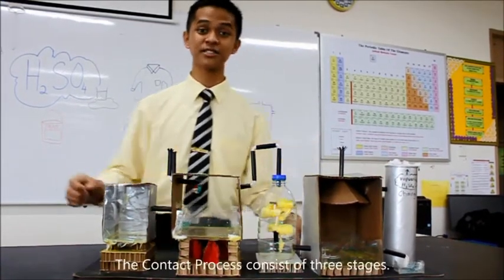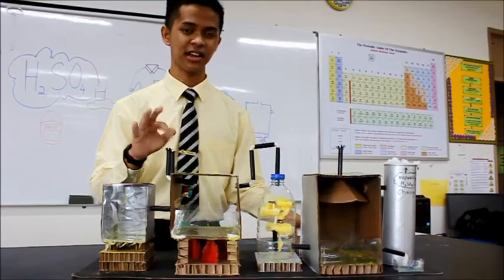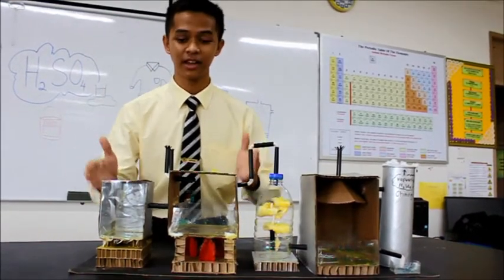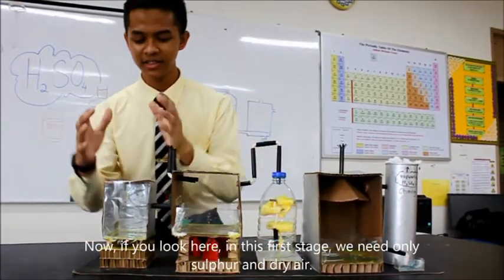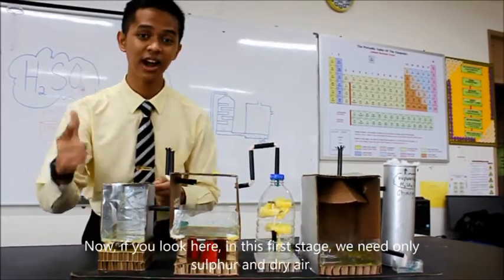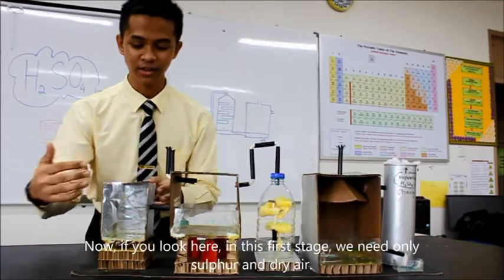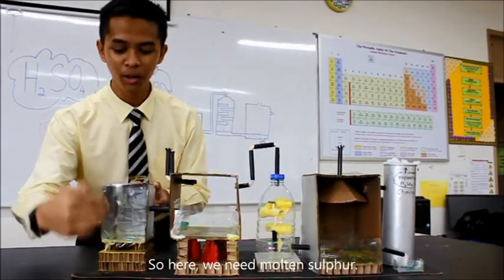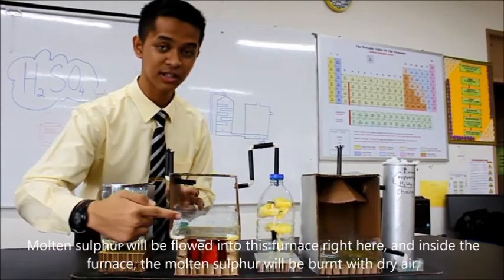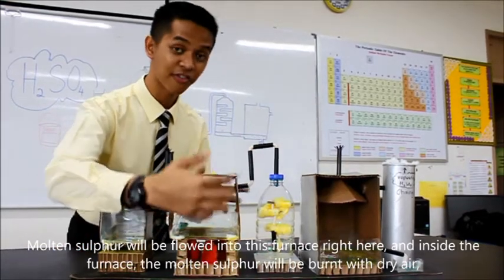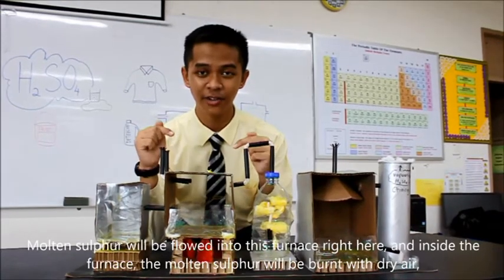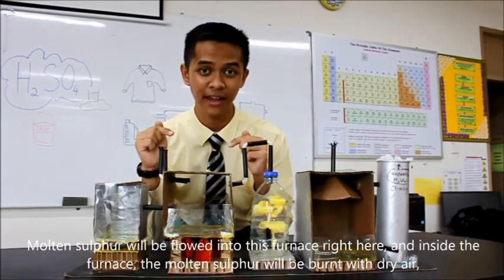This model right here explains the entire contact process. The contact process consists of three stages. Let me explain the first stage. Now if you look here, in this first stage, we need only sulfur and dry air — specifically, molten sulfur. Molten sulfur here will be flowed into this furnace right here.